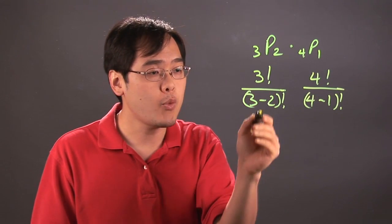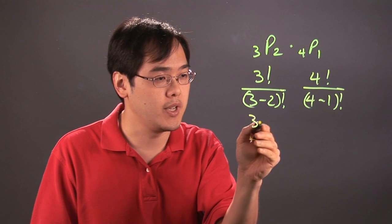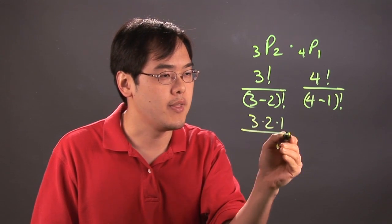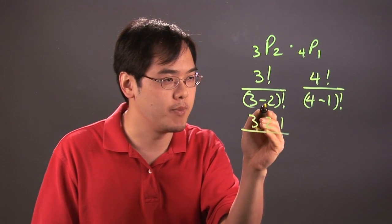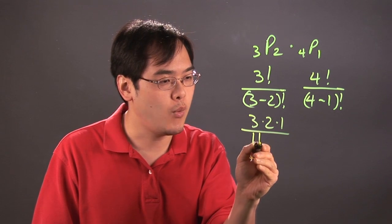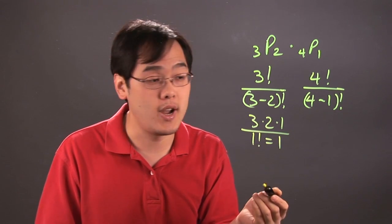Now 3 factorial, as you know, is going to be 3·2·1 with the numbers multiplied together, and then (3-2) factorial is going to be 1 factorial. Now 1 factorial is just the number 1, so that's a good thing for us.